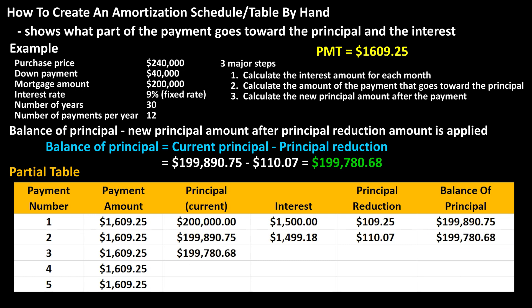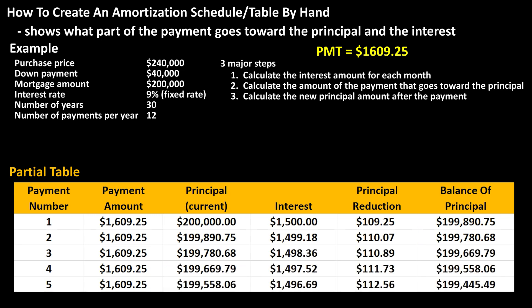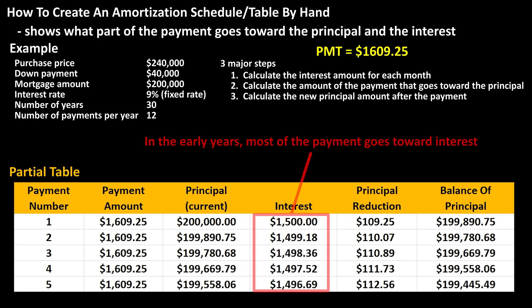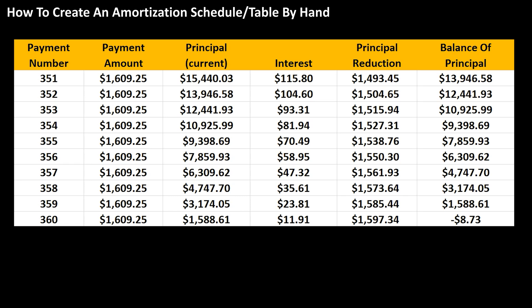We can put that in the table in the last column, and also carry it into the third row as the current principal. The second row is now complete. As you can see, in the early years of a mortgage, a vast majority of payments goes towards interest. We would continue this process through 360 payments for the 30-year loan, as I've done on the screen here.